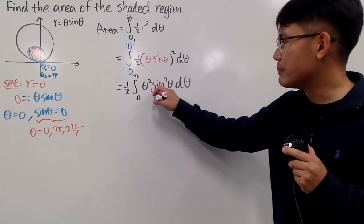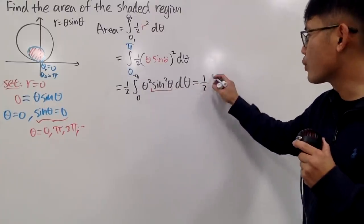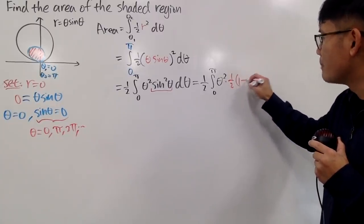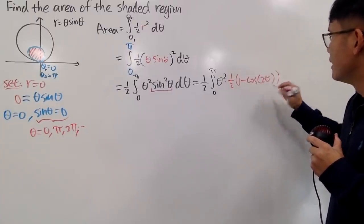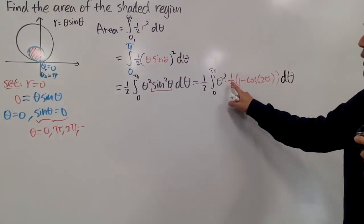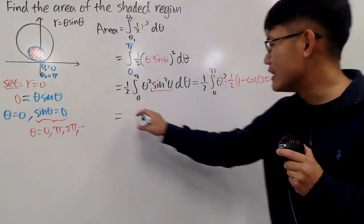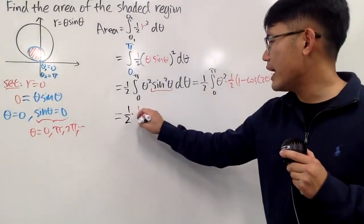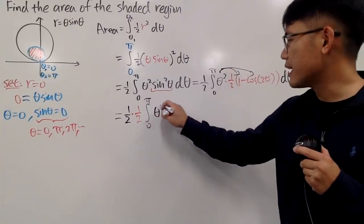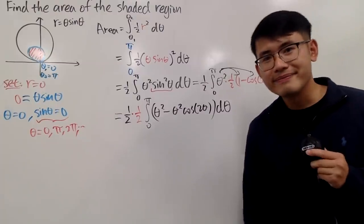To integrate this, we use the power reduction formula for sine squared theta. This gives us 1/2 from the outer constant, times the integral from 0 to pi of theta squared times one half times (1 minus cosine of 2 theta). Both one halves come to the front, and distributing gives theta squared minus theta squared times cosine of 2 theta. This simplifies to 1 over 4 out front.